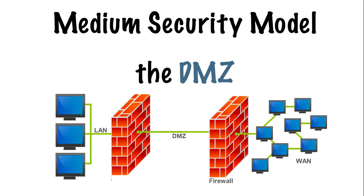In this tutorial I'll discuss a medium security architecture that's very common in small businesses. This model features a zone called the DMZ. It takes its name from the war term Demilitarized Zone, where you have an area between two opposing factions. Here it's an area between an untrusted zone and a trusted zone.